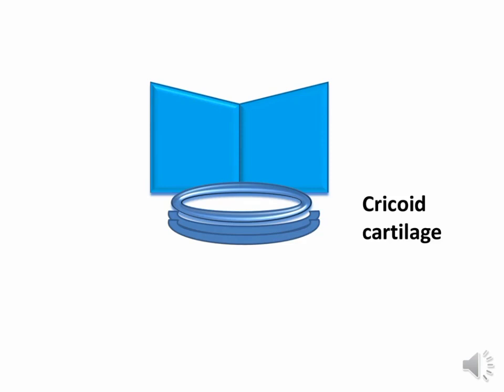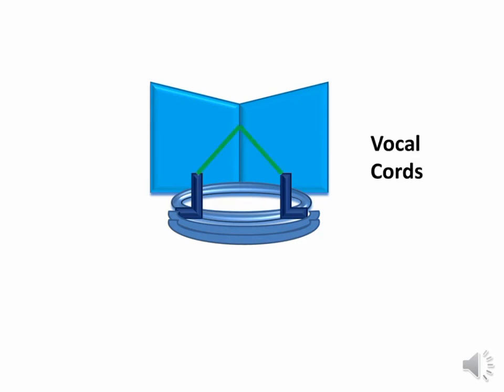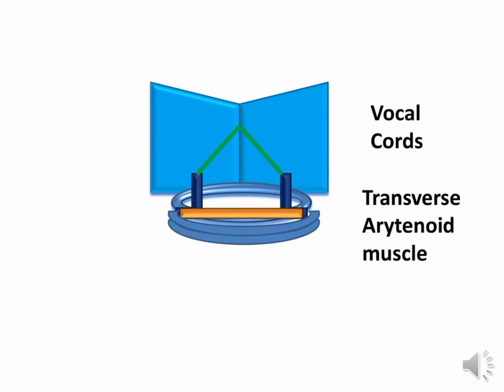The posterosuperior borders of the cricoid cartilage has two arytenoid cartilages on either side. The vocal process of the arytenoid cartilage gives attachment to the vocal cords. The muscular process of the arytenoid cartilage gives attachment to the muscles.